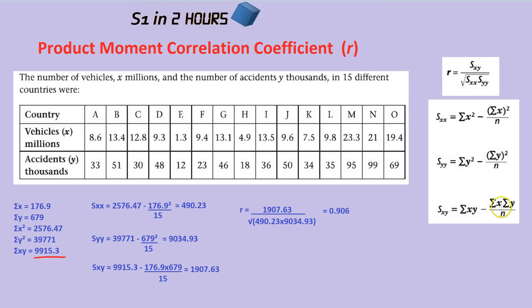The next part looks similar but it's not quite the same — it's the sum of X times the sum of Y. That's all of these added up times by all of these added up, which is very different. They have given us all of the Xs added up and all of the Ys added up, so we can simply multiply them together and then divide by N. N is how many numbers in each row — there are 15 numbers in each row, so N is 15. Putting that into the formula, SXY is the sum of XY take away the sum of X times the sum of Y, divided by 15.